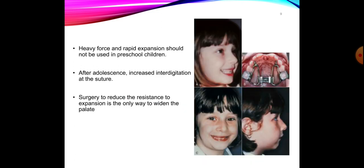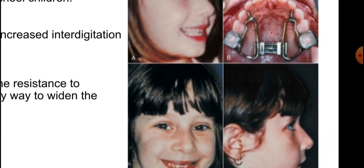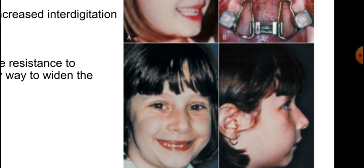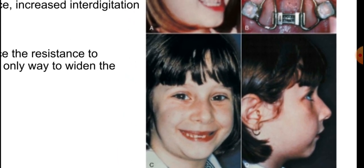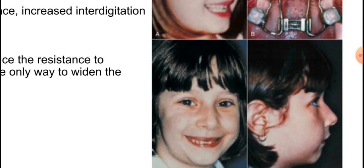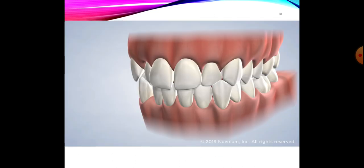It is important to realize that heavy force and rapid expansion should not be used in preschool children because of the risk of producing undesirable changes. As seen in this patient's before picture — no nasal hump or swelling in the paranasal area — whereas after rapid expansion we can see development of a prominent nasal hump, paranasal swelling, widening of the alae of the nose, tissue damage, and hemorrhage. Therefore rapid expansion in preschool children is contraindicated.